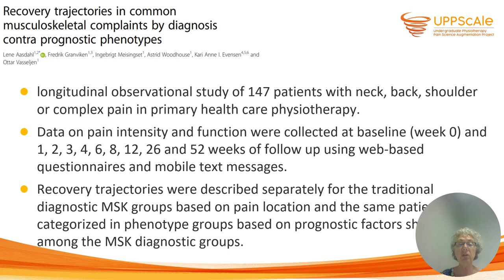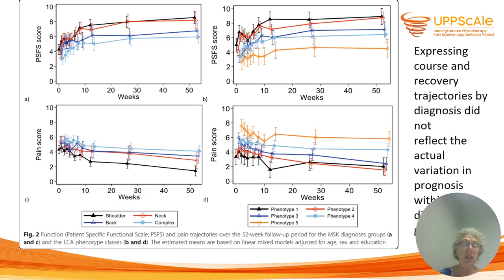In another study, around 47 patients with neck, back, shoulder, or complex pain were measured in primary health physiotherapy. They collected a lot of data over time and then described recovery trajectories separately for traditional diagnostic musculoskeletal groups based on pain location, and the same patient groups categorized into phenotype groups based on prognostic factors. On the left you can see the diagnostic groups across patient-specific functional score and pain, and on the right the phenotypes — and you can clearly see that the phenotypes differentiate better from each other than the diagnostic groups.